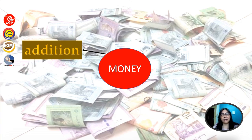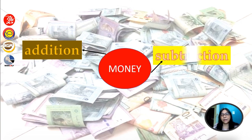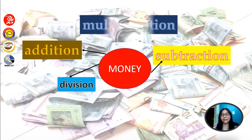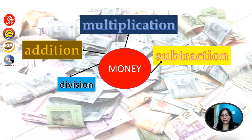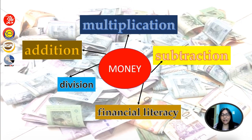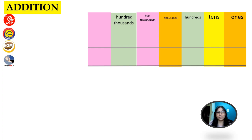In the topic money for year five, we have addition in money, subtraction, division, multiplication, and also financial literacy. Let's look at addition first.